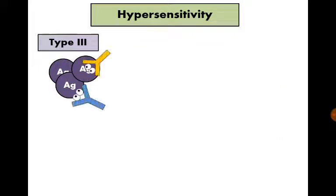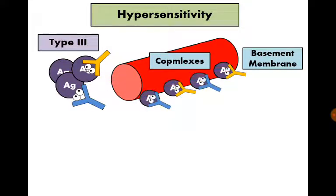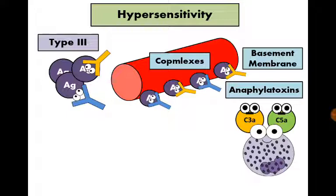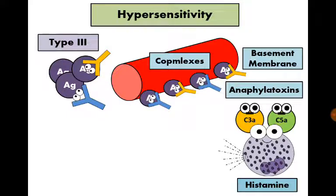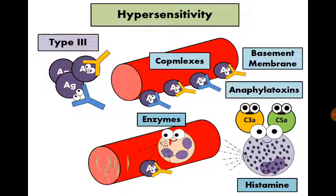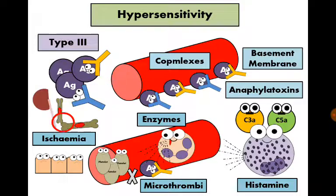Type 3 hypersensitivity includes immune complexes that become precipitated in blood and in the basement membrane of small blood vessels. Anaphylatoxins C3a and C5a become activated, stimulating basophils that secrete histamine and neutrophils that secrete enzymes destroying the basement membrane. Also, platelets accumulate, forming microthrombi, occluding the blood vessel and causing ischemia of tissues, mostly in joints and kidney.